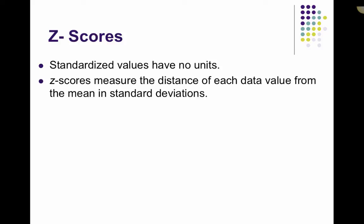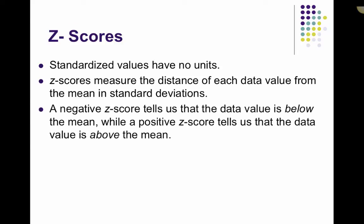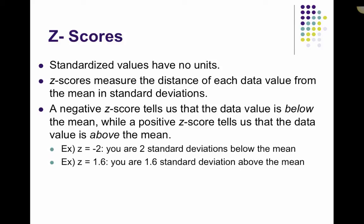z-scores measure the distance of each data value from the mean in terms of standard deviations. A negative z-score tells you that you are below the mean, while a positive z-score tells you that you are above the mean. For example, a z-score of negative 2 tells you that you are 2 standard deviations below the mean. A z-score of 1.6 tells you you are 1.6 standard deviations above the mean.